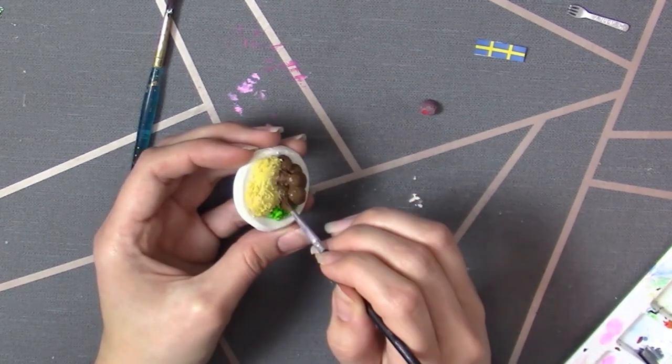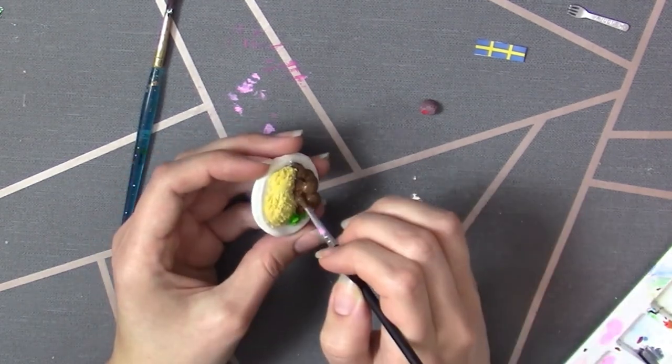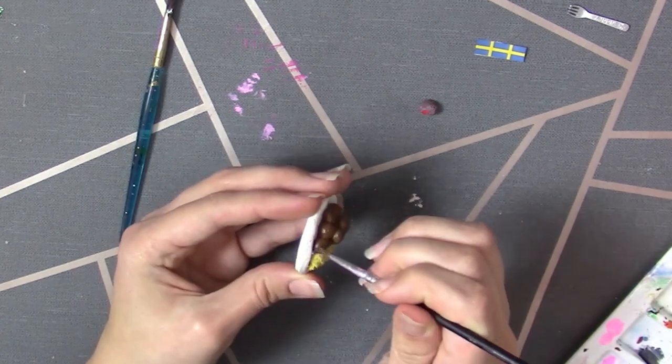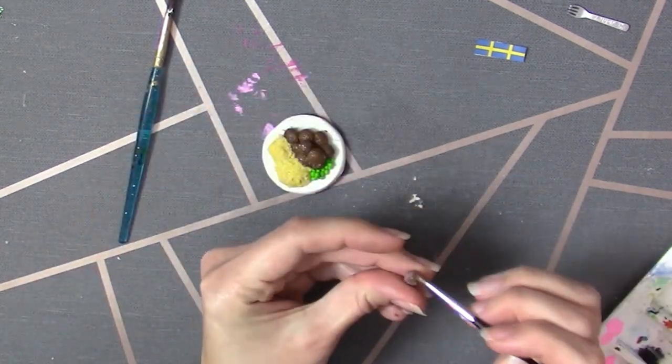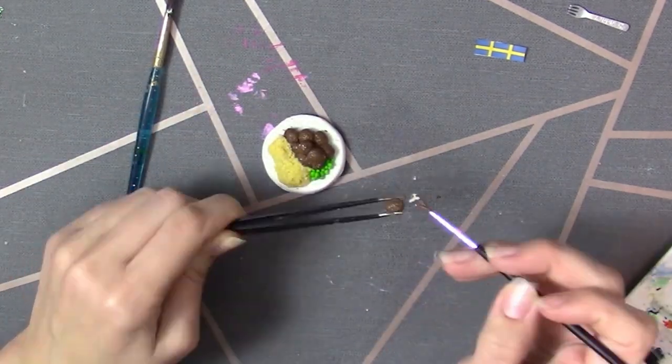Once it had cooled down fully, I painted the meatballs using brown paint. I use Arteza acrylics, as you can mix them with water easily, and they're fast drying.